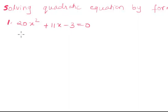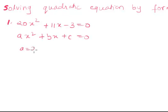We compare this equation with ax squared plus bx plus c equals 0. The value of a is 20, the value of b is 11, and the value of c is minus 3.